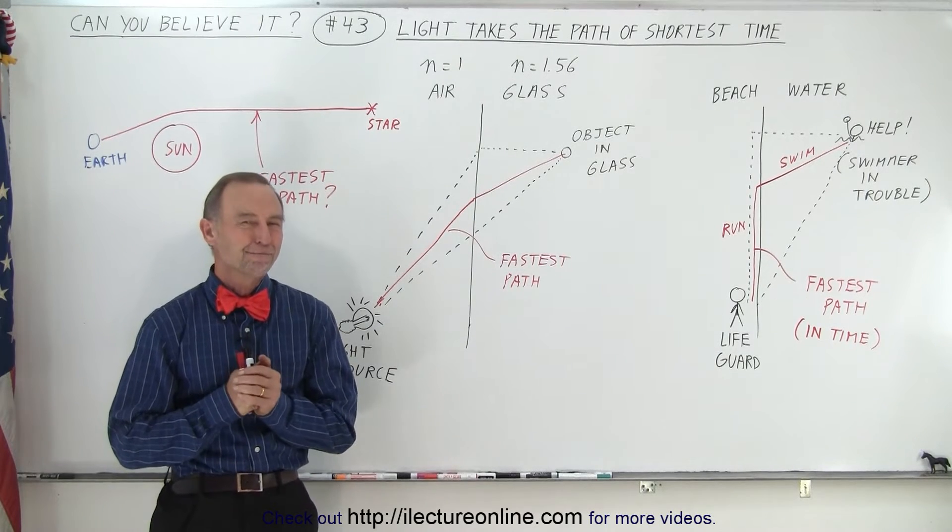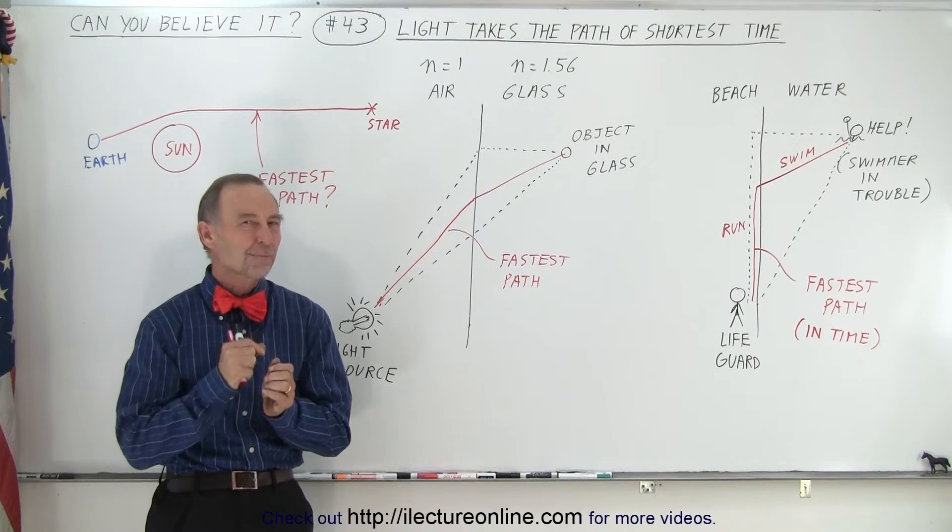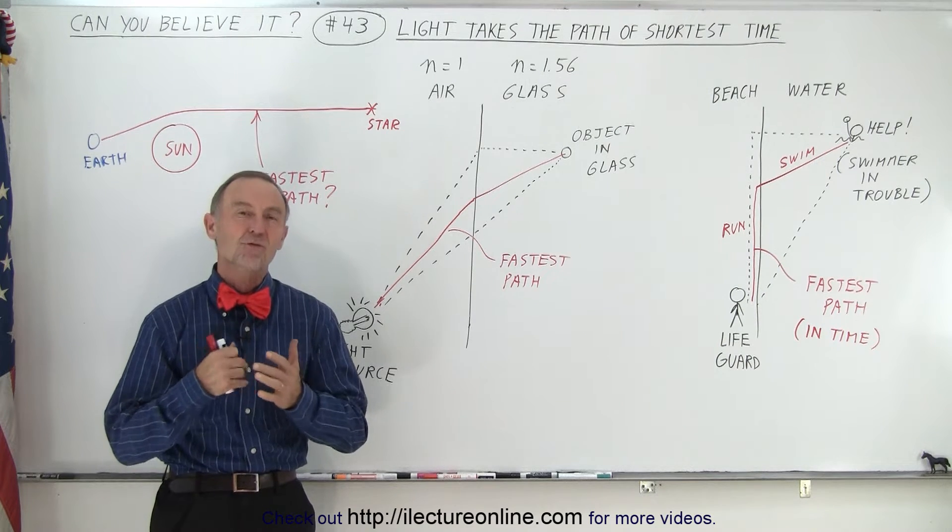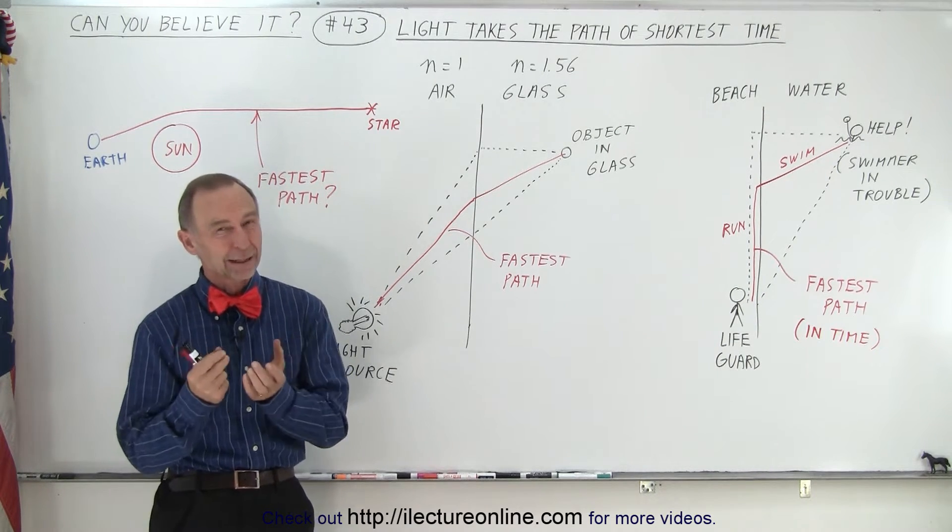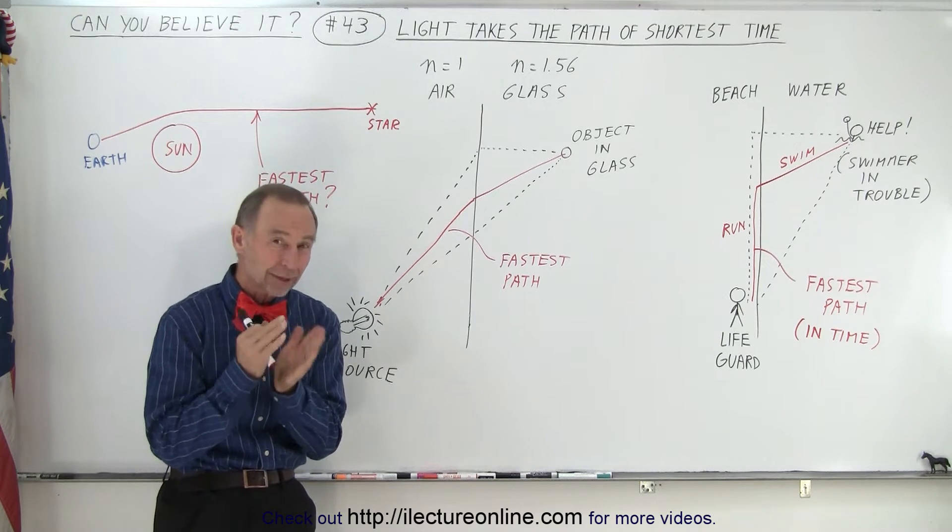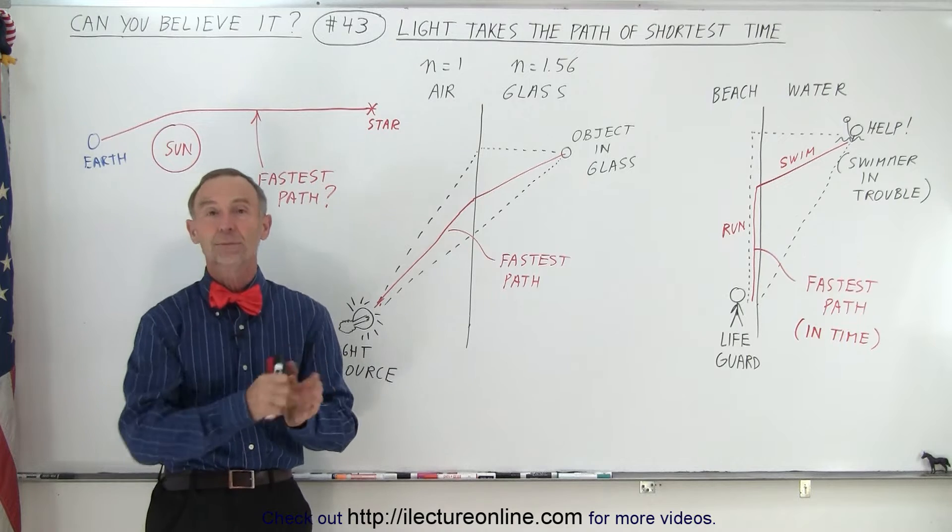Welcome to ElectronLine. Now here's another very interesting point we're going to look at, which is how does light travel, and it turns out that light travels along the path that takes the least amount of time to get from point A to point B.